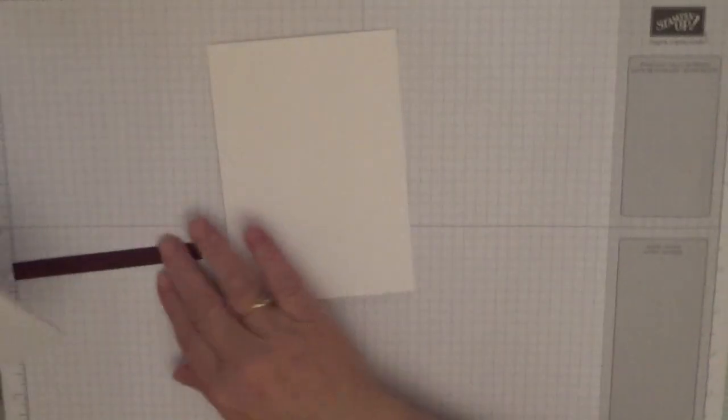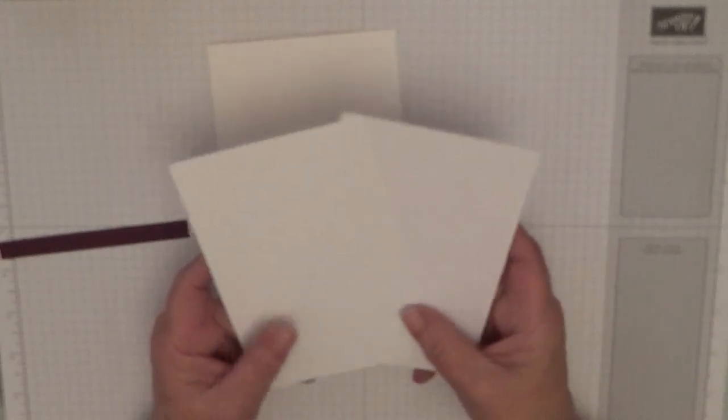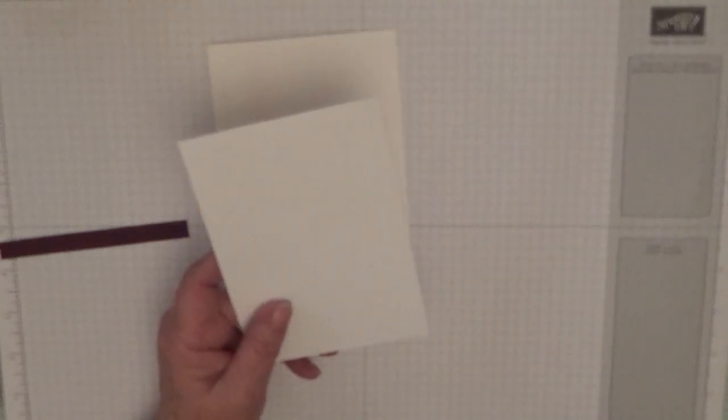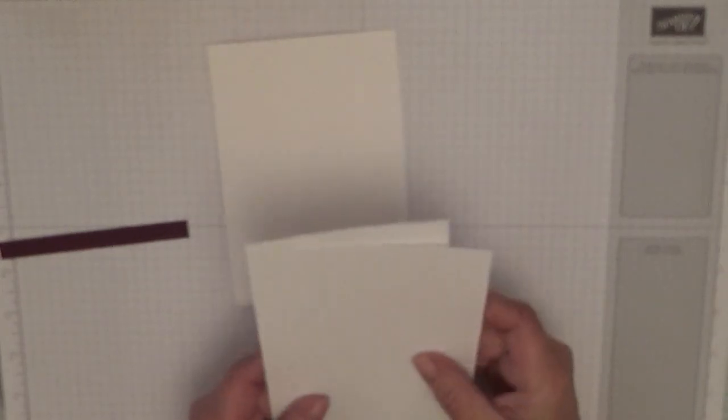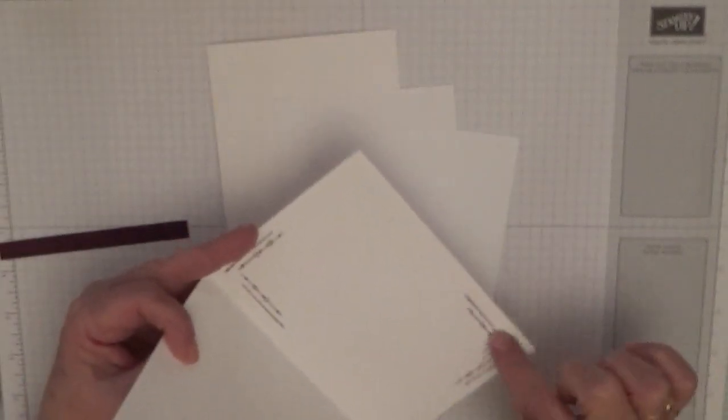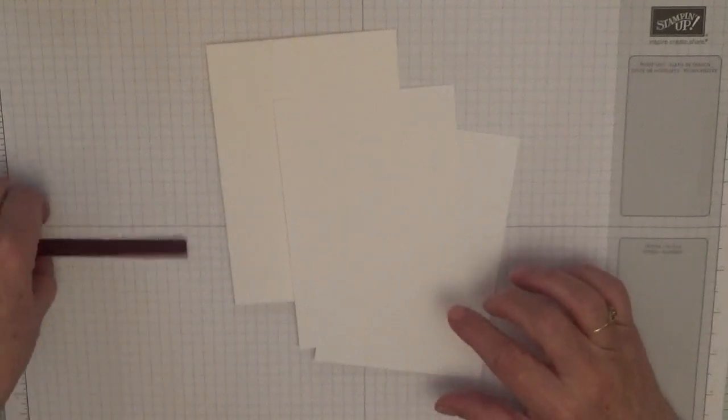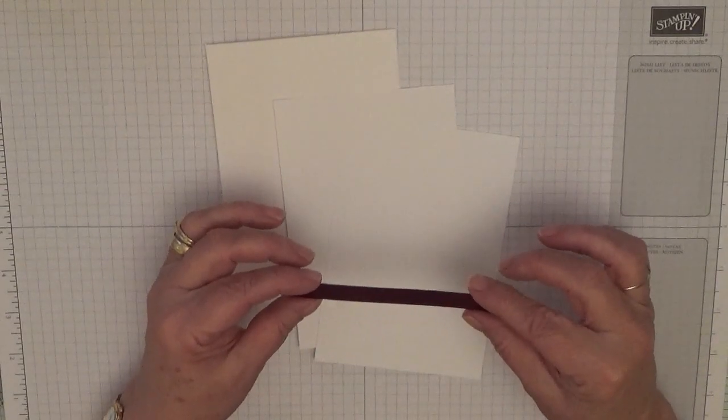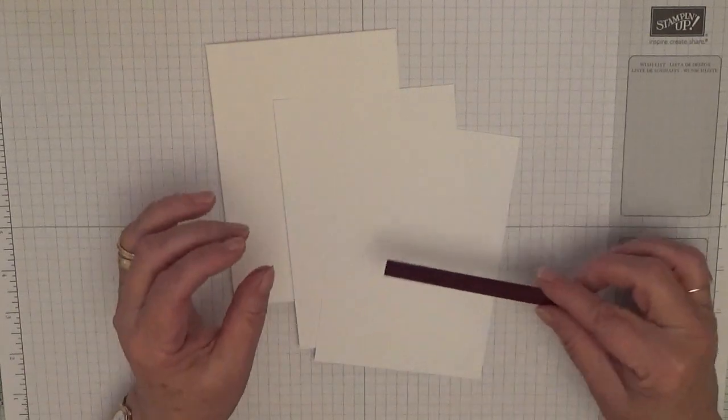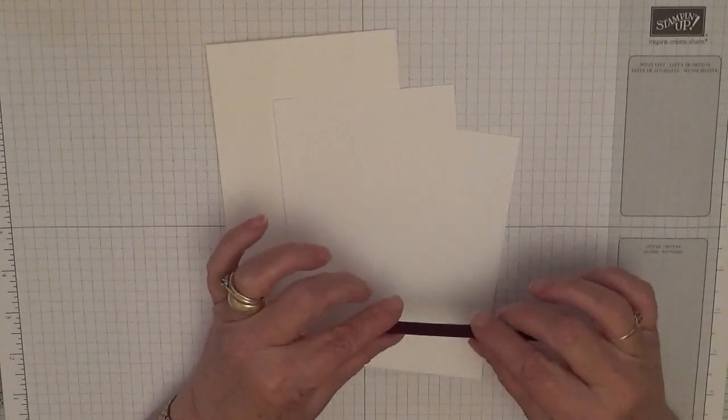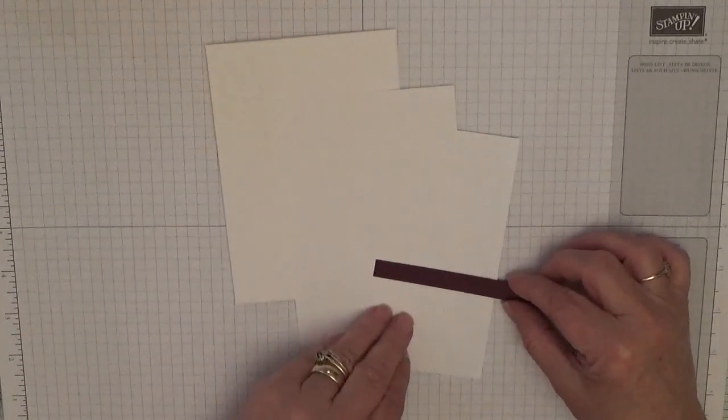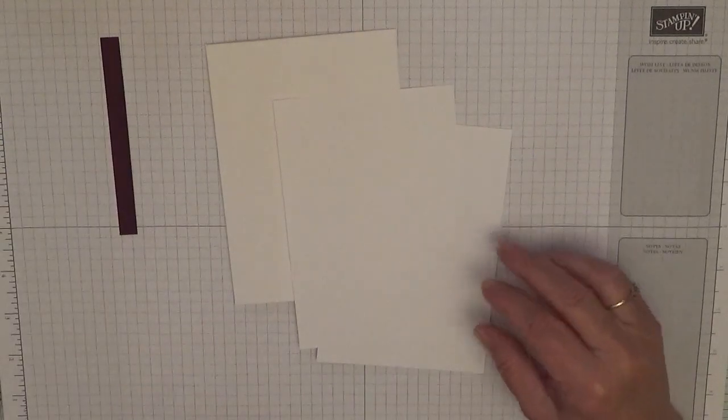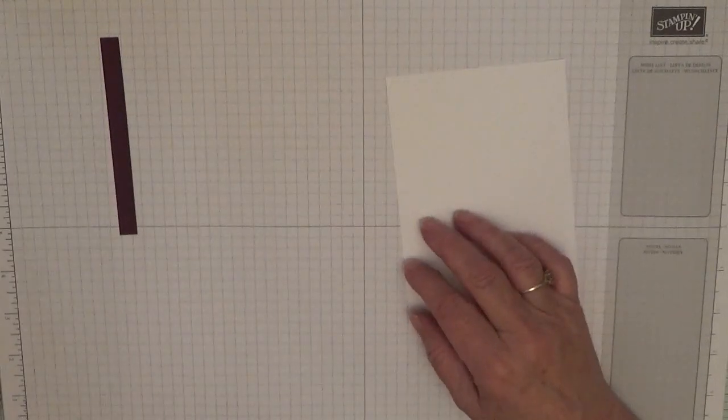You'll need two bits of white card stock at five and five eighths by three and seven eighths. One for the inside, one for the outside. We're going to be decorating both. And you also need a piece of blackberry bliss card for the sentiment. This is three eighths, and we'll be chopping it off. So you need it at least two and a half inches, but we'll chop that off when time comes.